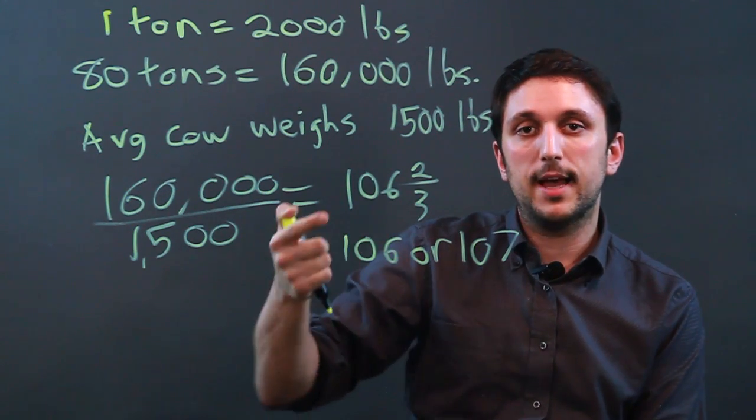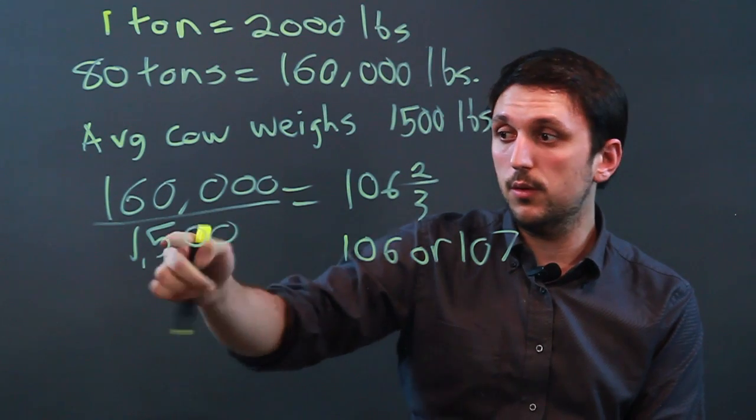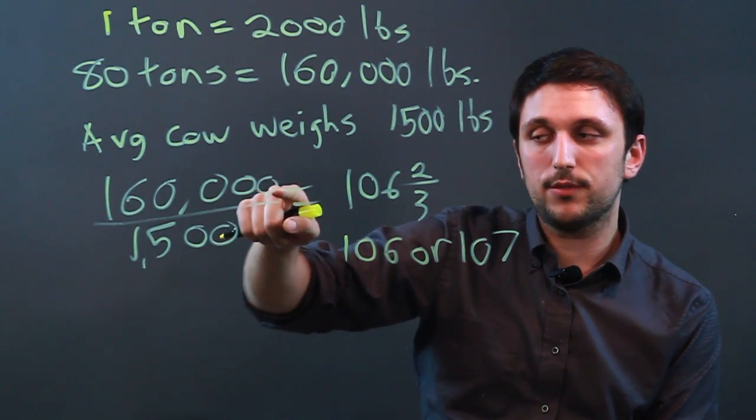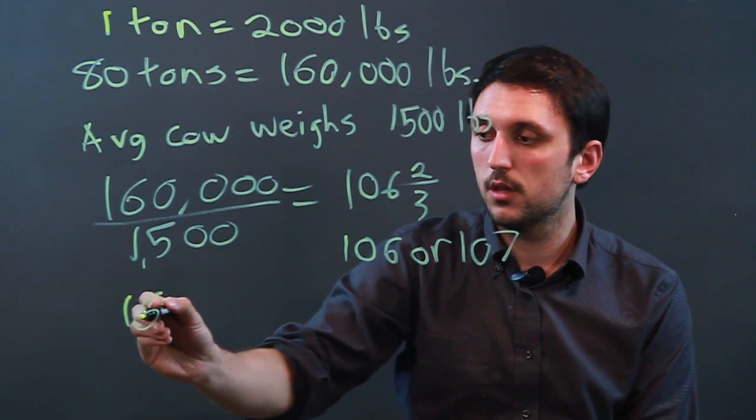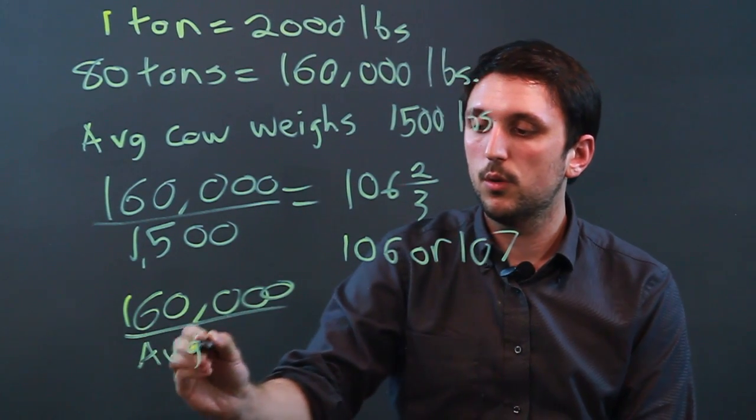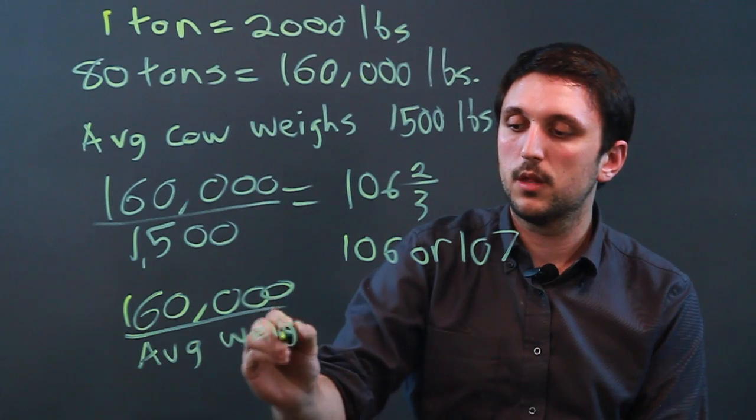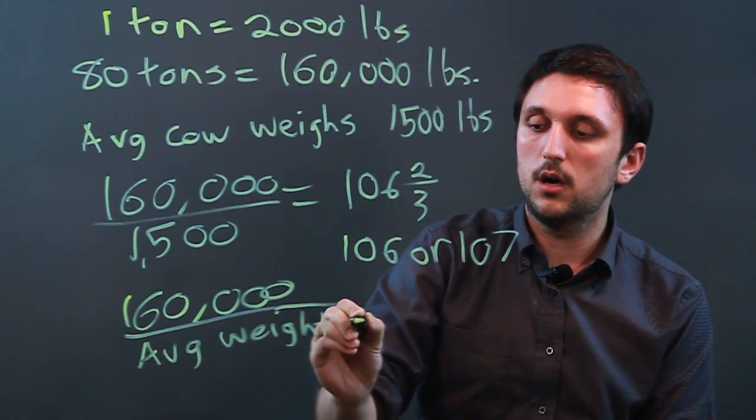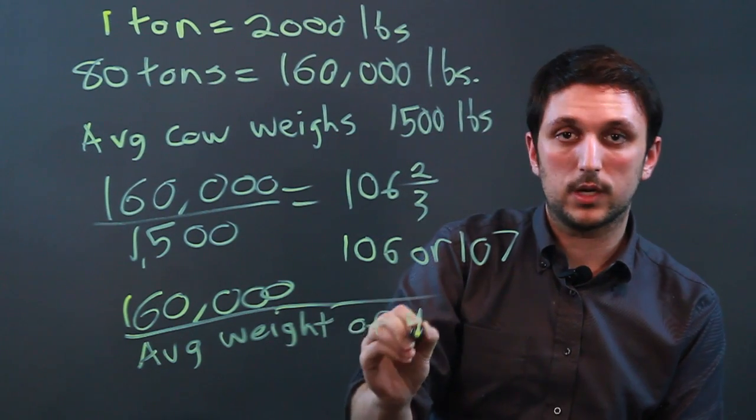Now if you find a different average for your cows, then basically you take the same number, 160,000, and you divide it by the average weight of your cows.